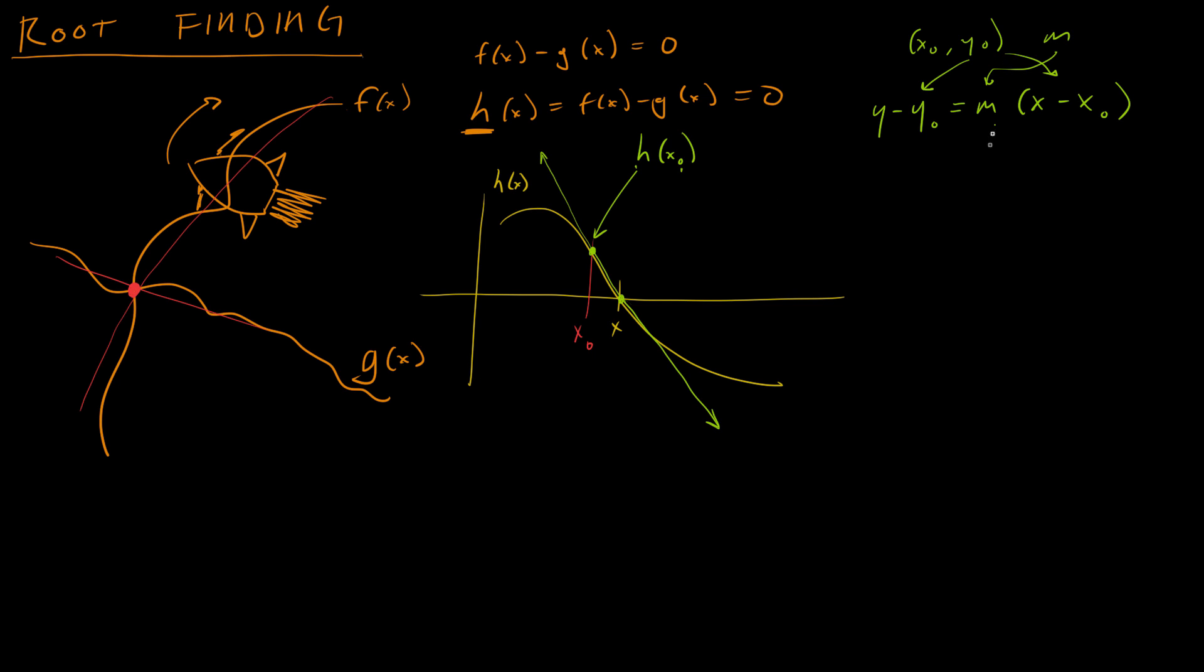And we can find the slope because this function is going to have a derivative. Now, here's a caveat. The function might not have a derivative. If it's crazy like this, if it's the ground, then we can approximate the derivative.